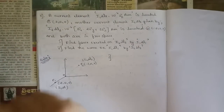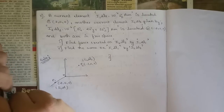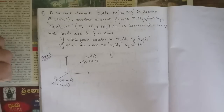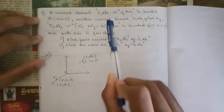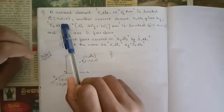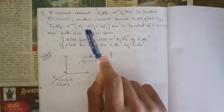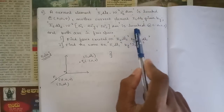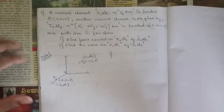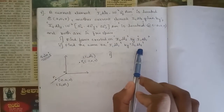Hello everyone, welcome to this new session. In this session we are going to solve one problem related to module 4 current element. It is a very simple problem yet very lengthy. The question: a current element i1 dl1 equals 10 to the power minus 4 az vector ampere-meter is located at point (2, 0, 0). Another element i2 dl2 equals 10 to the power minus 6 (ax minus 2ay plus 3az) ampere-meter is located at point (-2, 0, 0), both in free space. We need to find the force exerted on i2 dl2 by i1 dl1 and also on i1 dl1 by i2 dl2.